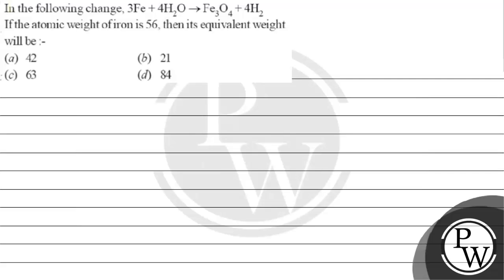Let's read this question. The question says: in the following reaction, 3Fe + 4H₂O gives Fe₃O₄ + 4H₂. If the atomic weight of iron is 56, then its equivalent weight will be — option A: 42, option B: 21, option C: 63, option D: 84. The key concept for this question is equivalent weight.